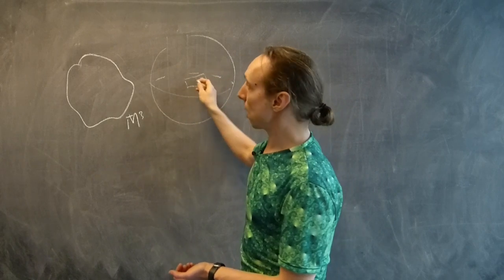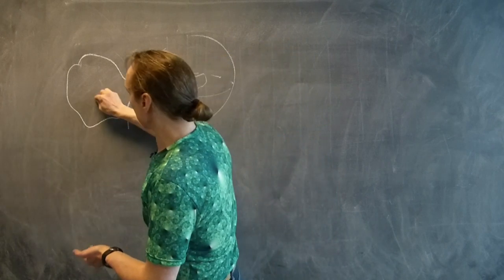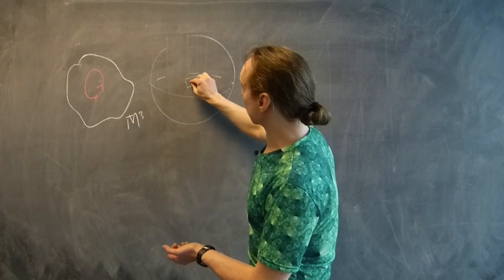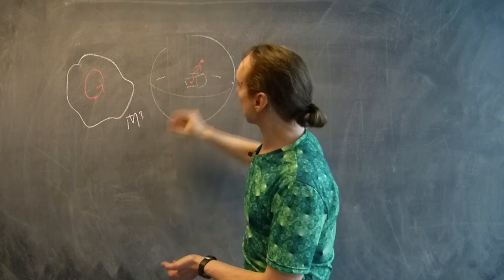Each one of these covers exactly once the original manifold. If we have a loop, maybe alpha, inside the original manifold, then that lifts to give us some loop, some not loop, some arc in the universal cover.